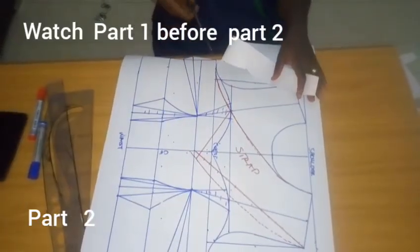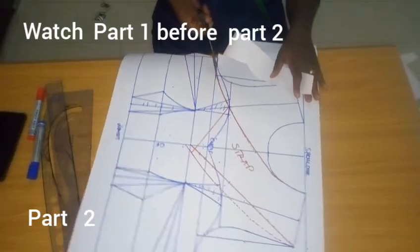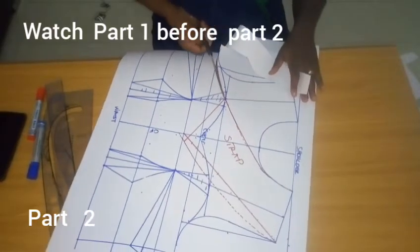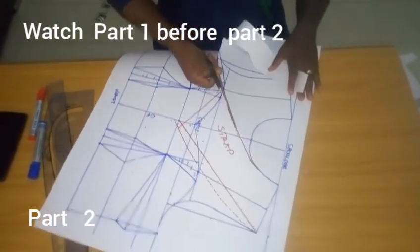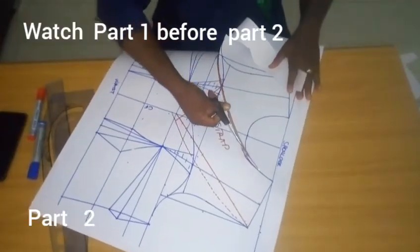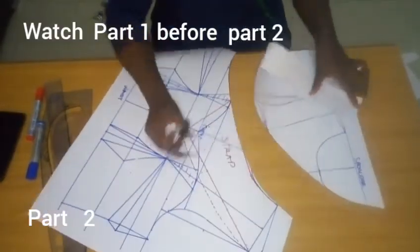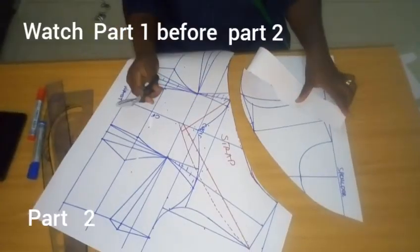So when you are cutting off, you are going to cut on your strap. That is why we build our strap. We are cutting right on the strap. Take notes. So you can see that part of the bustier we drafted has gone.